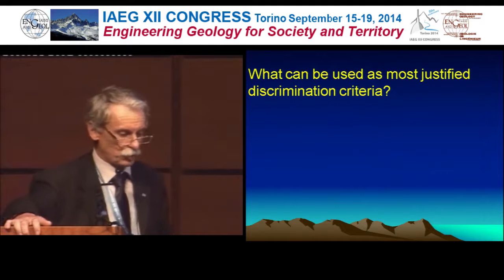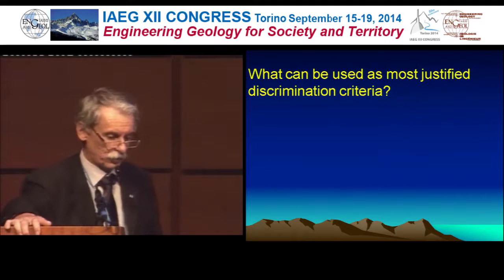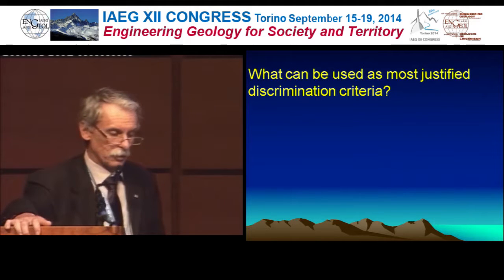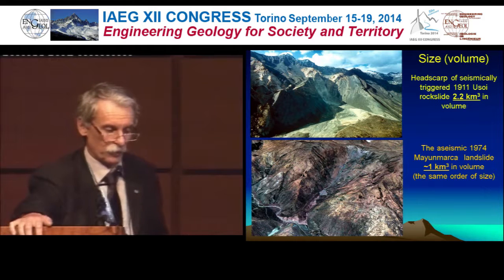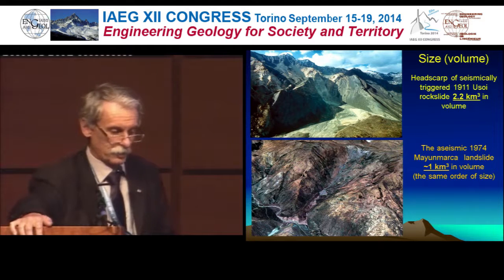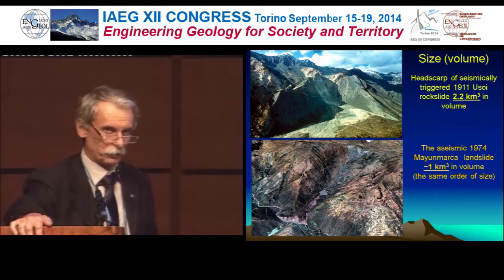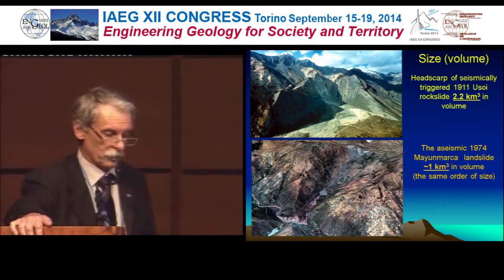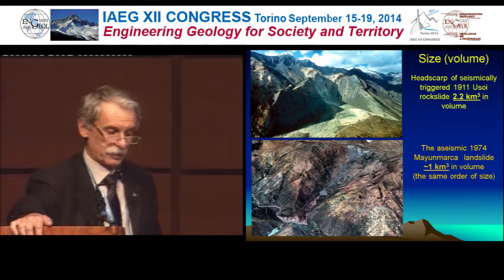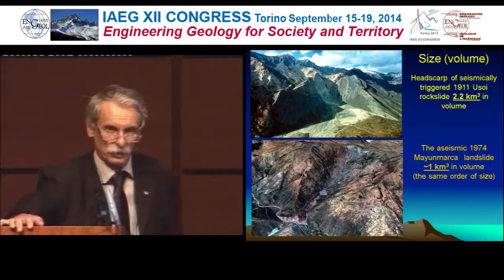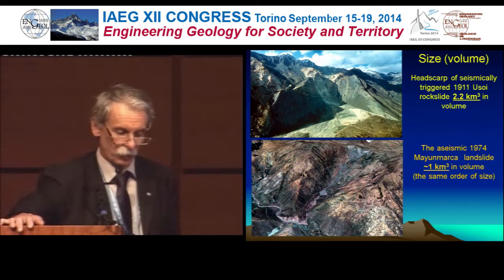So what can be used as the most justified discrimination criteria? Size of event? Run-out of event? Let's look at some examples. The headscarp of the seismically triggered Usoi landslide is 2.2 billion cubic meters in volume. And the seismic 1974 Mayumarka landslide is about one cubic kilometer in volume — the same order of size.